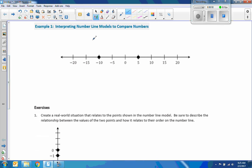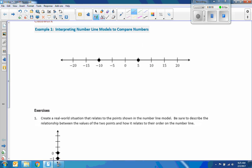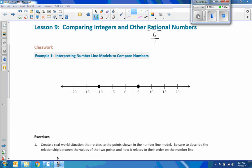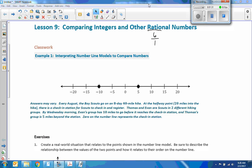Interpreting number line models to compare numbers. Exercise 1. Actually, this is an example. Here we were to create a real-world situation that relates to the numbers on the number line. Include an explanation of what zero represents in your story. Students should contribute suggestions to help the story evolve and come to a final state. So, you're given this. Try to come up with a story that includes the number negative 10, number 5, and tell me what zero represents in your story.